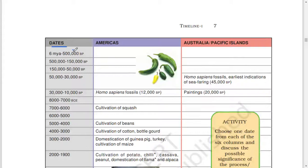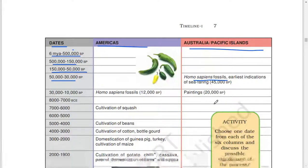Dates: Americas, Australia or Pacific Islands. 6 MYA to 500,000 BP. 500,000 to 150,000 BP. 150,000 to 50,000 BP. 50,000 to 30,000 BP: Homo sapiens fossils, earliest indications of seafaring, 45,000 BP. 30,000 to 10,000 BP: Homo sapiens fossil, 12,000 BP.